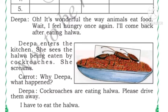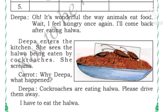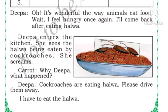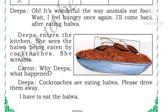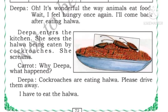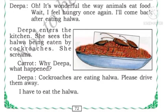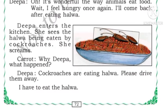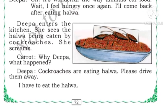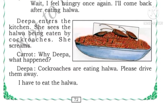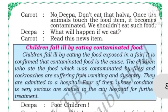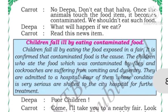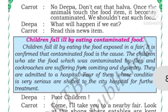Deepa says it is wonderful the way animals eat food, but now she feels hungry. She goes back to the kitchen to eat the carrot halwa, but she sees the halwa is being eaten by cockroaches. She screams. Carrot asks what happened, and Deepa says the halwa is eaten by cockroaches. Carrot tells her: no, Deepa, you should not eat that halwa — once an animal touches food it becomes contaminated and unhealthy.